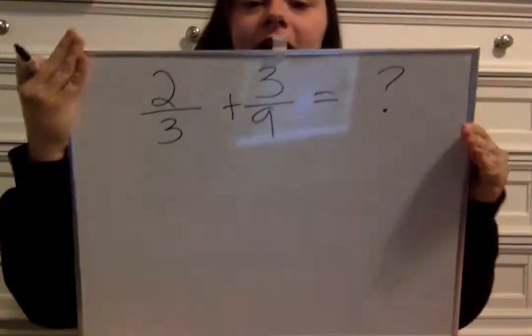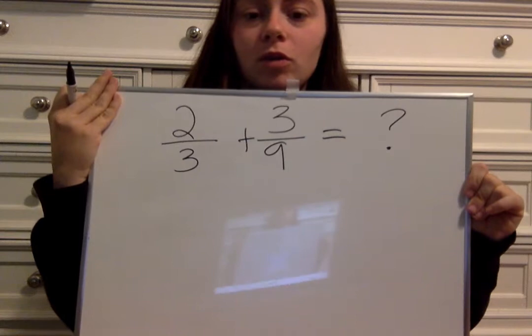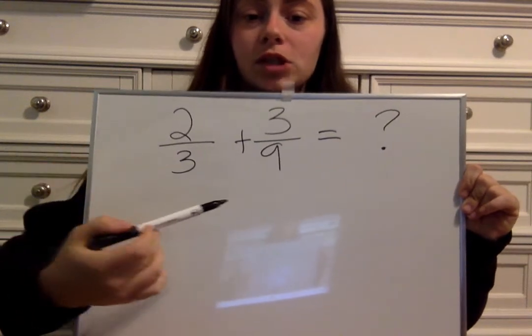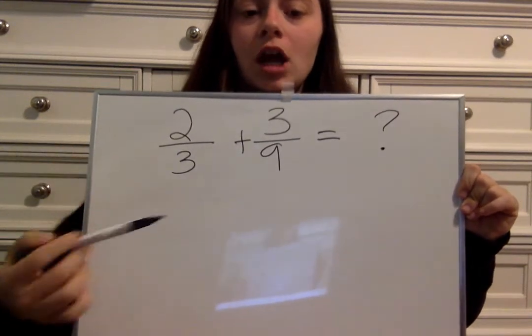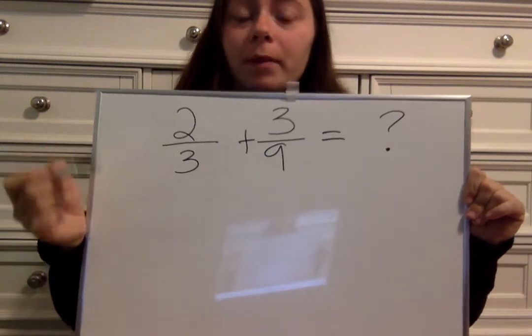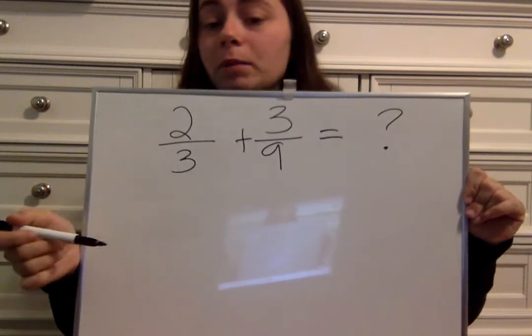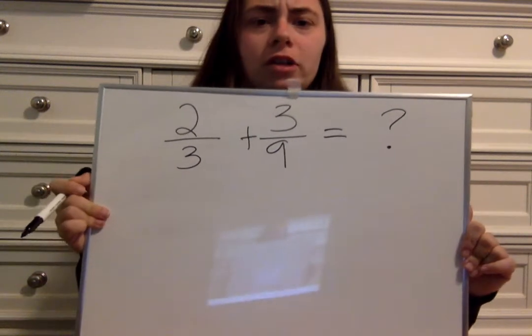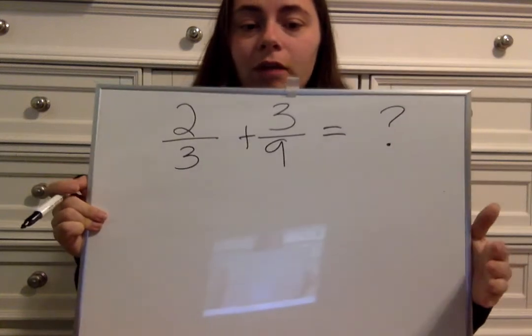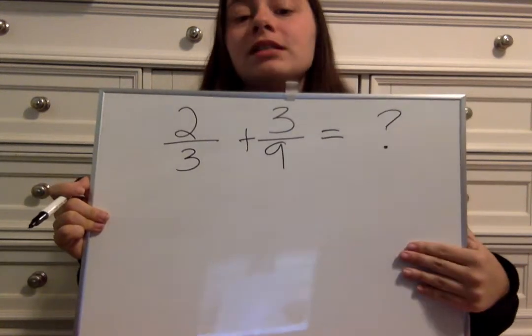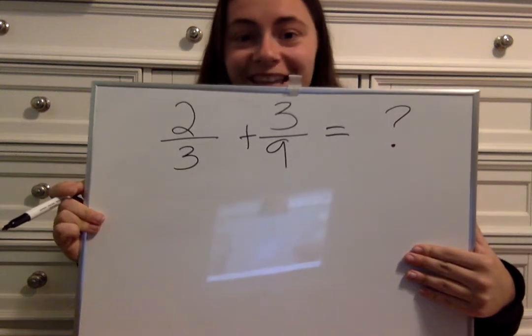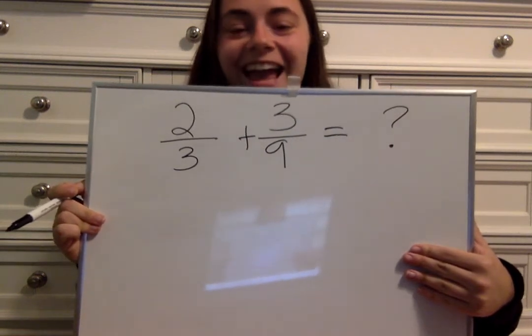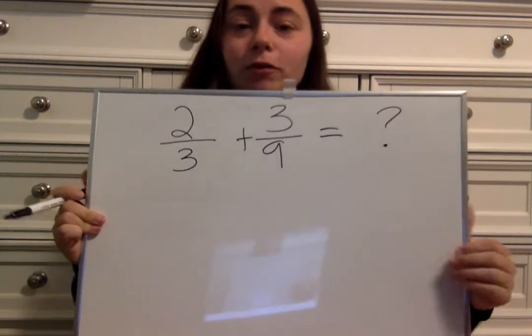Today the problem is two-thirds plus three-ninths. You need to either draw a picture, use the least common multiple, or if you have another strategy, you can use that. Now is the time to hit pause, write down this problem, and then go ahead and get solving. Hit play again when you have solved your problem.